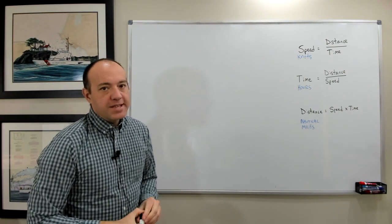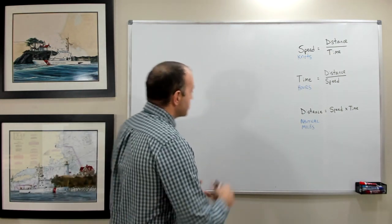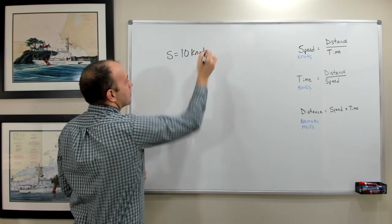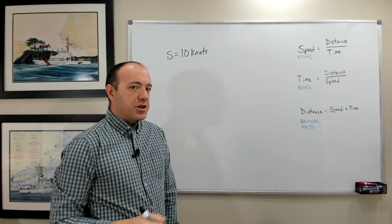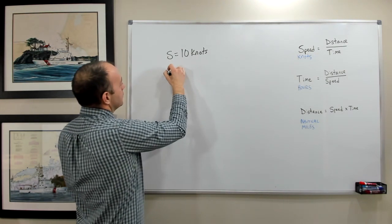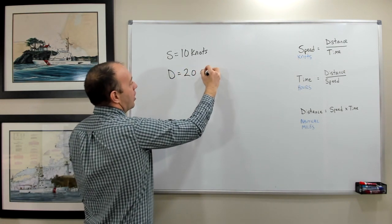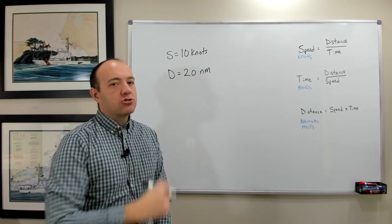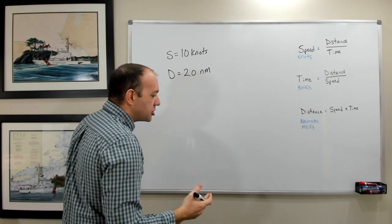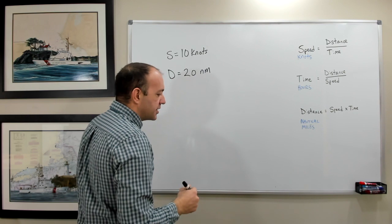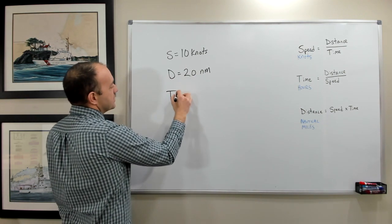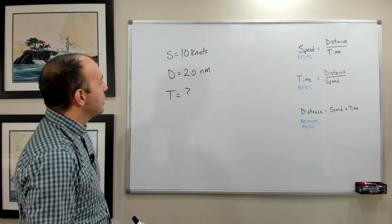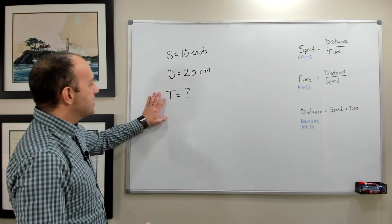Let's do a couple of practice problems that you may find in real life if you're navigating. So let's say that your speed is equal to 10 knots. The captain has set your speed at 10 knots and that's the speed that you're going to go. And you have traveled, your distance is equal to 20 nautical miles. Maybe you look at a chart plotter or you've got some other information that says we've just traveled 20 nautical miles. How much time is this going to take? How long does it take? What is the time? How much time did it take or how much time will it take? Well, we need to think about what formula to use.